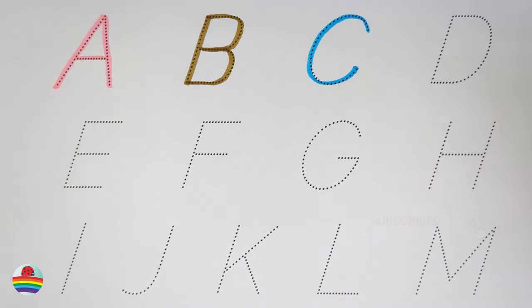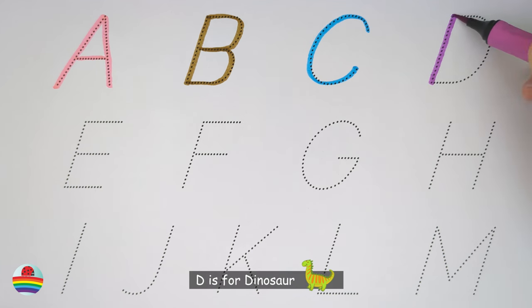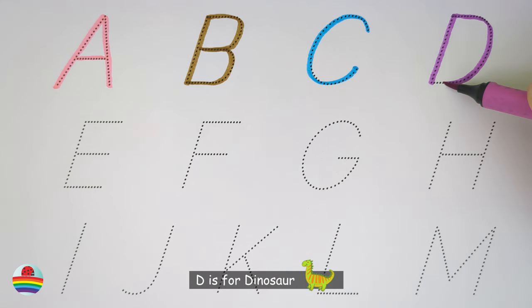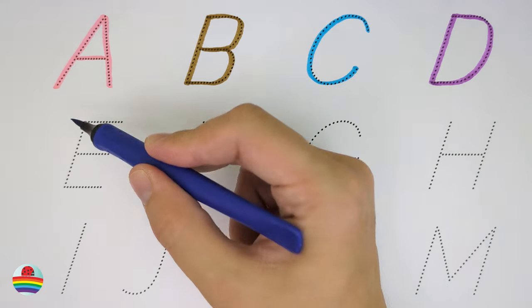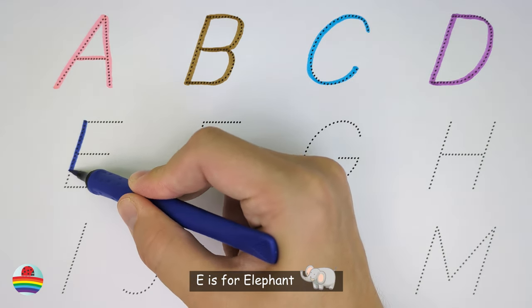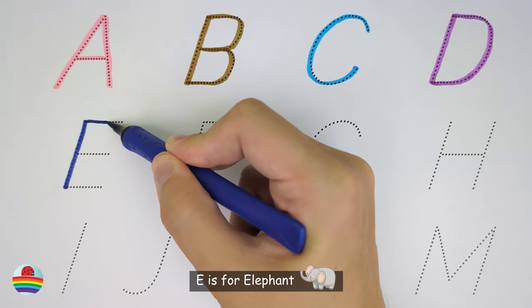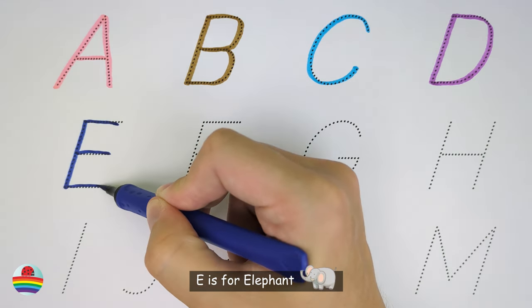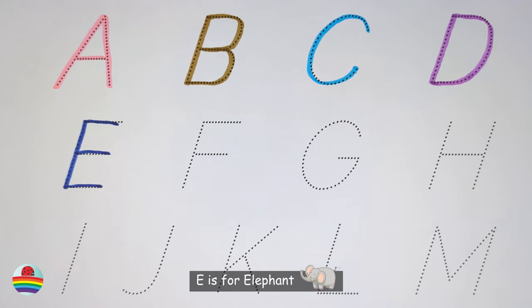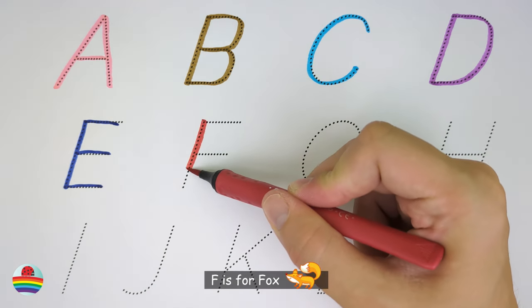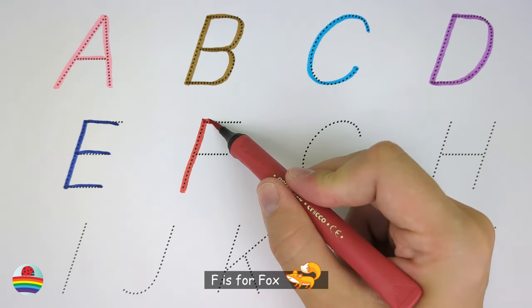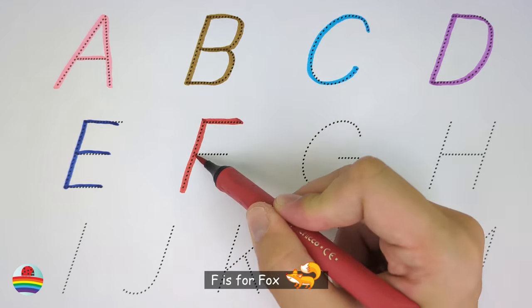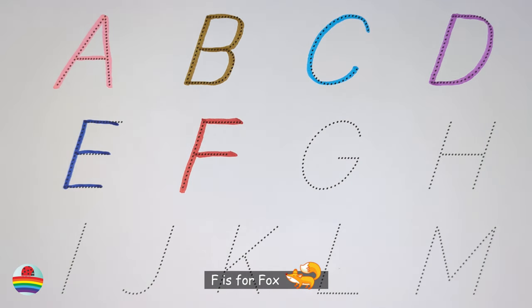D. D is for dinosaur. D. E. E is for elephant. E. F. F is for fox. F.